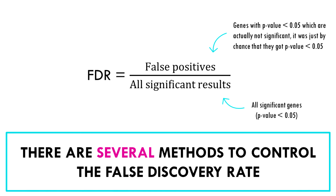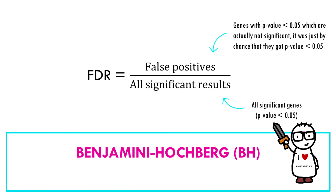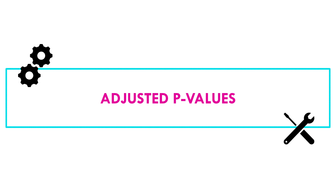The first method proposed to control the FDR was the Benjamini-Hochberg procedure. There is a high probability — no pun intended — that I pronounced that wrong. But anyway, we first had this BH procedure, and soon afterwards the Q-value was introduced as a more powerful approach to controlling the FDR. In both cases, we get a new list of corrected or adjusted p-values for each test, and we can just use these adjusted p-values as we would the normal p-values.